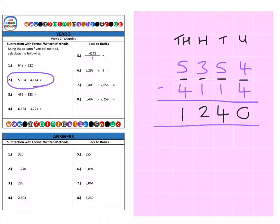As you can see there's no real difference between question 1 and 2. Question 2 just happens to have an extra digit, but it's no more difficult — there's just an extra column to subtract.